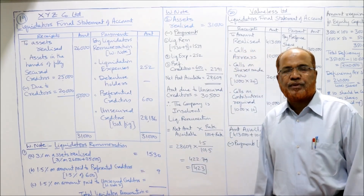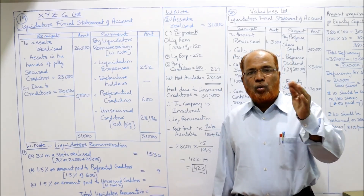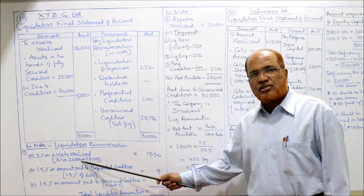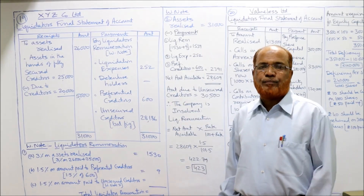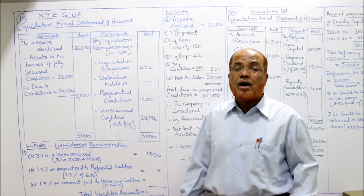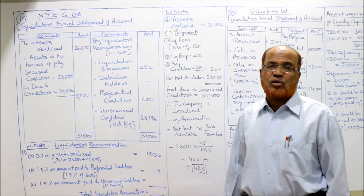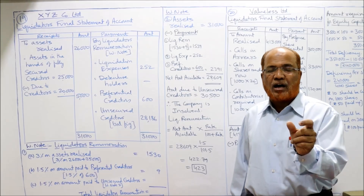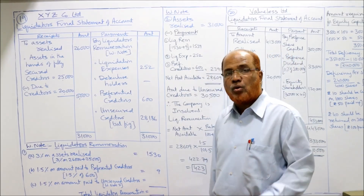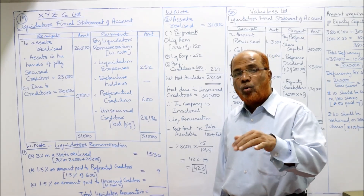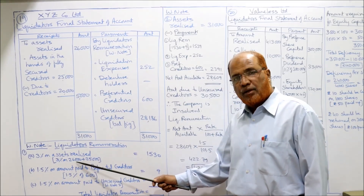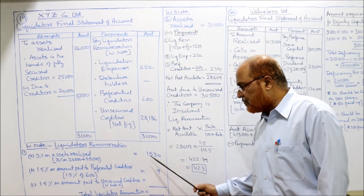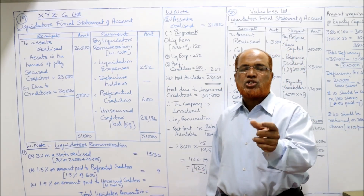Working note 1: Liquidator's remuneration. 3% on assets realized including securities in hands of fully secured creditors: 26,000 + 25,000 = 51,000. 51,000 × 3% = 1,530. Then 1.5% on amount paid to preferential creditors (treated as unsecured): 1.5% × 600 = 9 rupees. For the 1.5% on unsecured creditors, we must determine solvency first in working note 2.